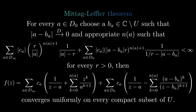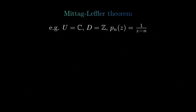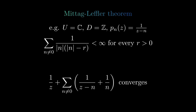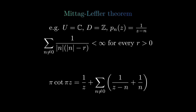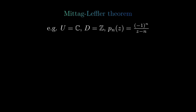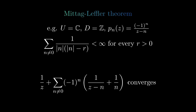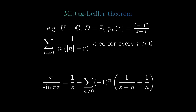We can apply this to find a meromorphic function on the complex plane with simple poles at every integer with residue 1. Since the relevant sum converges, we only need one correction term to ensure convergence. This turns out to be related to the cotangent. We can also find a function with simple poles at every integer with residues alternating between 1 and minus 1. Again, one correction term suffices, giving a formula related to the sine function.